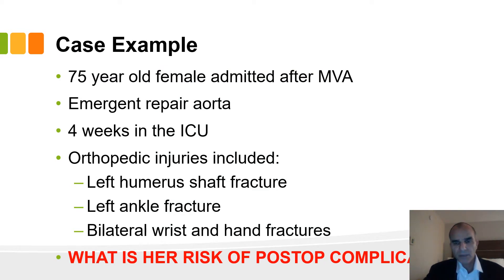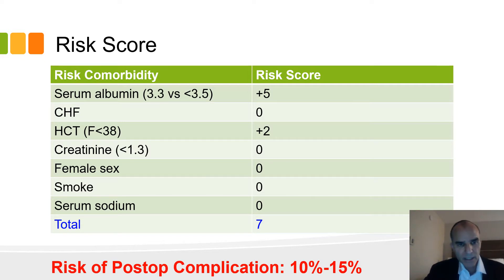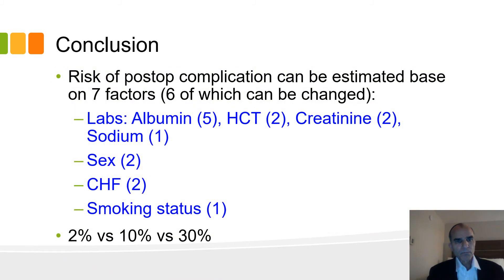Let's go to our example and see how she matches up with these risk factors. Her serum albumin was indeed low, giving her 5 points. No history of congestive heart failure. Her hematocrit was a little low, giving her another 2 points, and the rest turned out to be fine — she didn't have any of the other risks. So she had 7 out of 15 total points, putting her in the mid-range, 10 to 15% risk range.